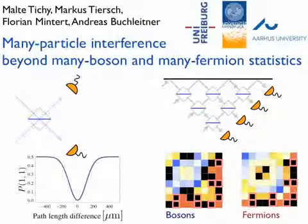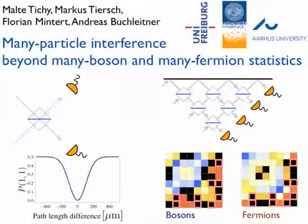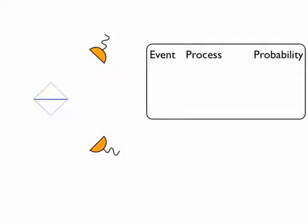But to begin with, how can particles interfere collectively? To explore this, we let two particles fall onto the two input modes of a beam splitter. As a reference point, let's see what happens for two distinguishable particles, which cannot interfere collectively.